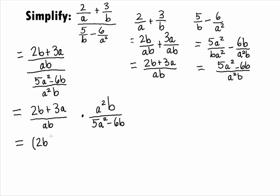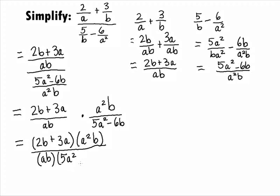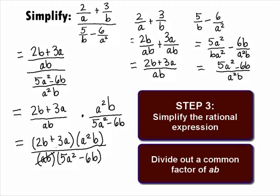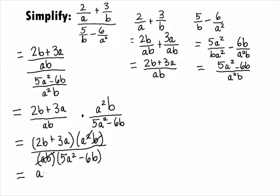We can write this as one fraction: 2b plus 3a times that second numerator of a squared b, all over ab times that second denominator of 5a squared minus 6b. It looks like we can divide out the common factors of a and b. When we do that, it leads us to our final answer of a times 2b plus 3a over 5a squared minus 6b.